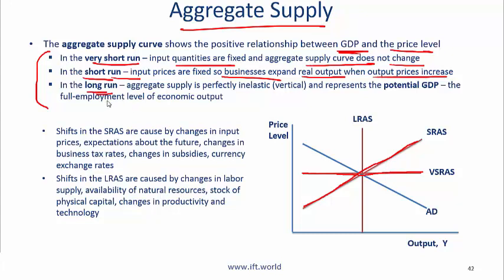In the long run, if prices go up, then costs such as wages also adjust. So in real terms, we are back to square one. The aggregate supply is perfectly inelastic or vertical, representing potential GDP — the full employment level of economic output. In the long run, you can't change output simply by changing price levels.